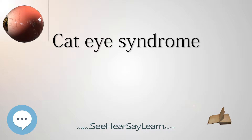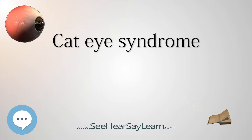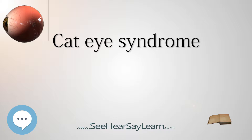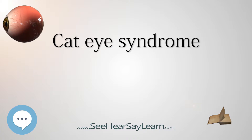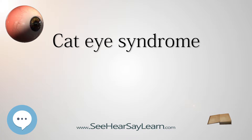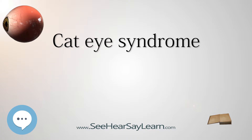Signs and Symptoms: Unilateral or bilateral iris coloboma — absence of tissue from the colored part of the eyes. Preauricular pits/tags — small depressions or growths of skin on the outer ears. Anal atresia — abnormal obstruction of the anus. Downward slanting palpebral fissures — openings between the upper and lower eyelids.